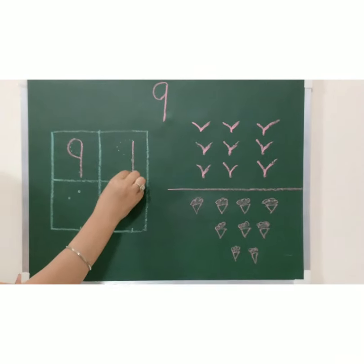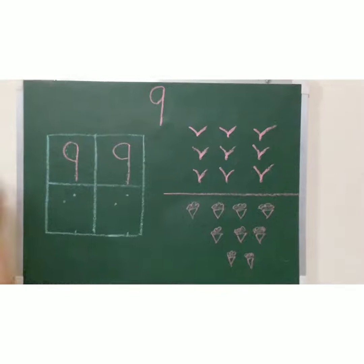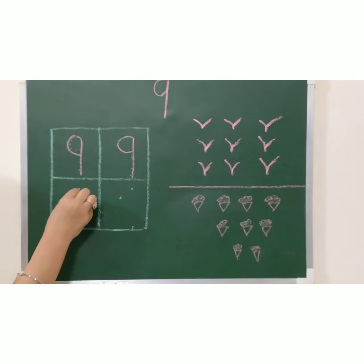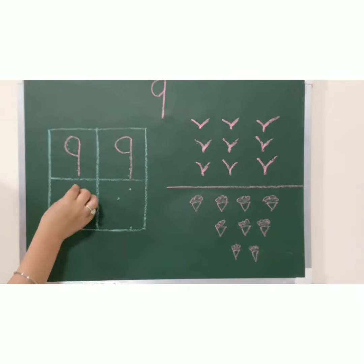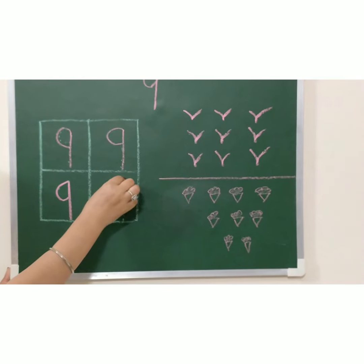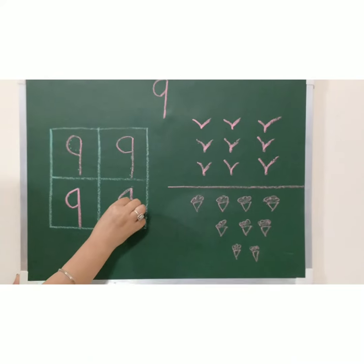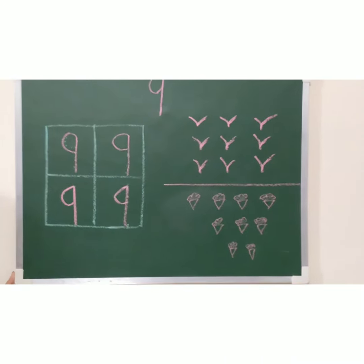One straight standing line and then one small curve. One straight standing line and one small curve. Standing line and curve. Number 9.